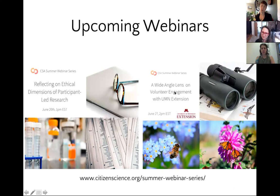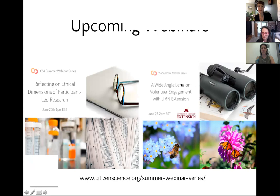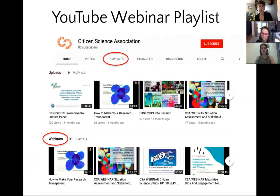In addition to today's webinar, we have upcoming events. The next webinar will be led by our ethics working group on June 20th. And then a webinar from the University of Minnesota's extension office looking at volunteerism and how to engage volunteers from a wide range of perspectives — that one will be on June 27th. So mark your calendars. These webinars will also be posted to our YouTube channel if you can't attend in person, though it can take a few days to edit and upload.